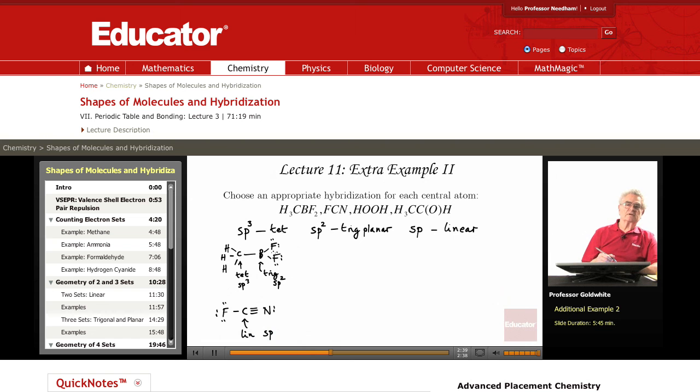The SP hybridization goes into making the two sigma bonds to F and to N. But remember, there are two p orbitals that are unhybridized.